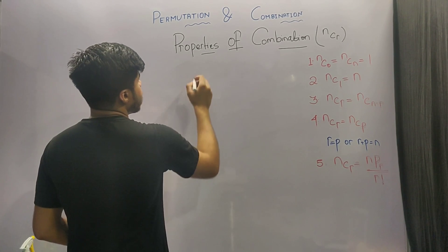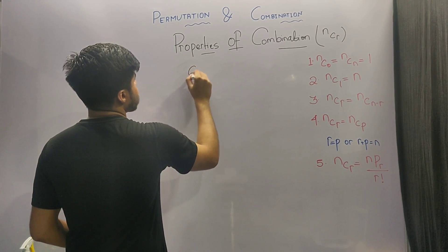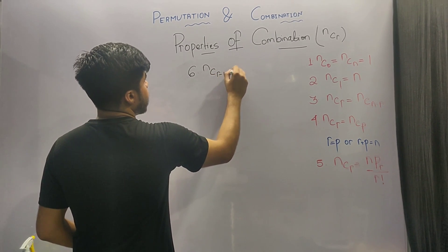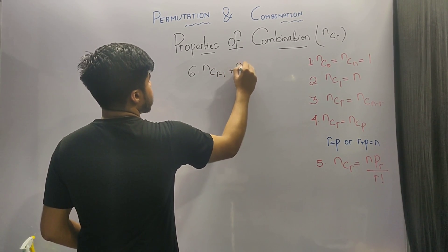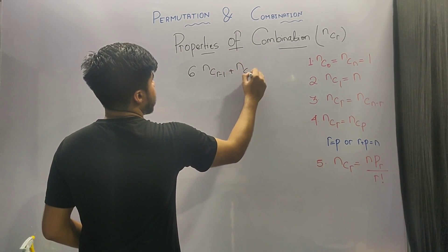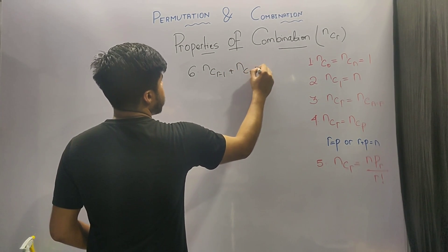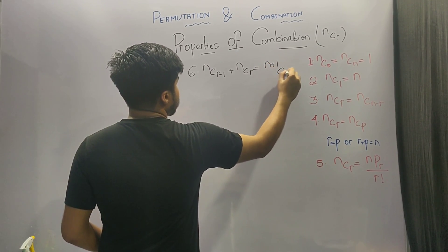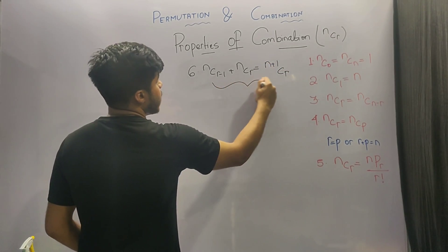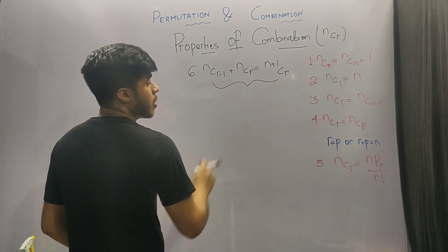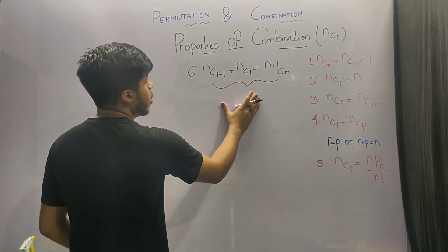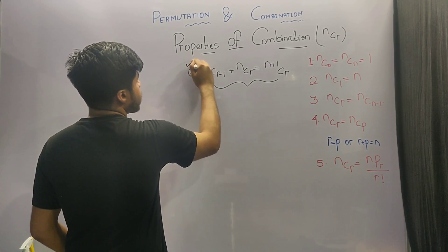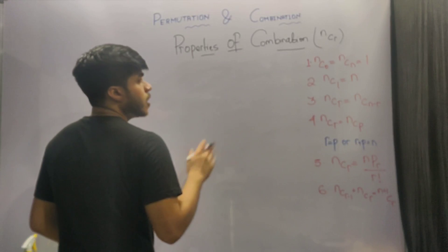The sixth and most important property of combination states that nC(r minus 1) plus nCr is equal to (n plus 1)Cr. Many questions are based solely on this property, so you must remember it.